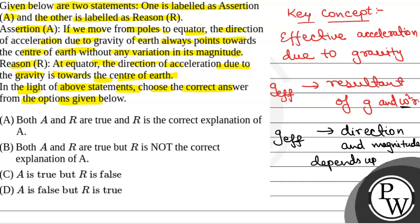So theta is the angle. Like for poles, theta is equal to 90 degree and at equator, theta is equal to 0 degree.